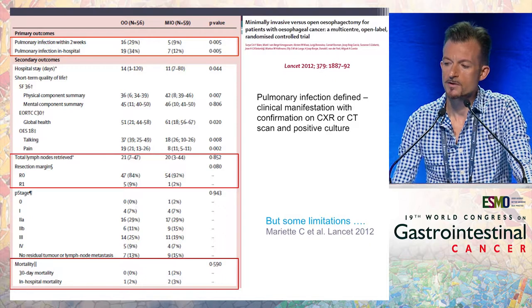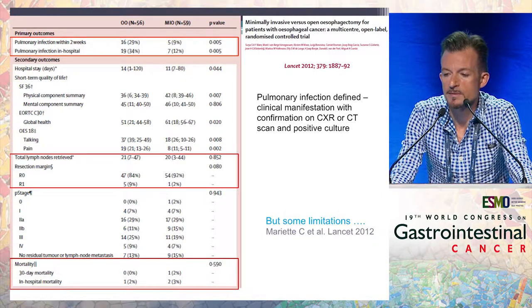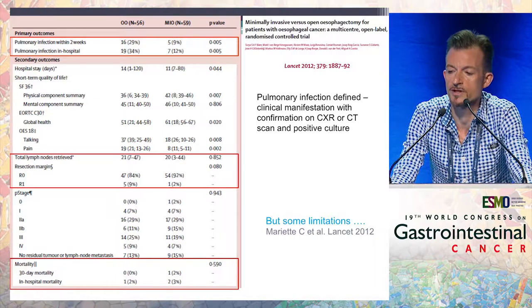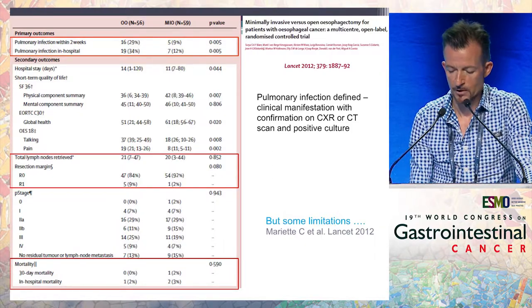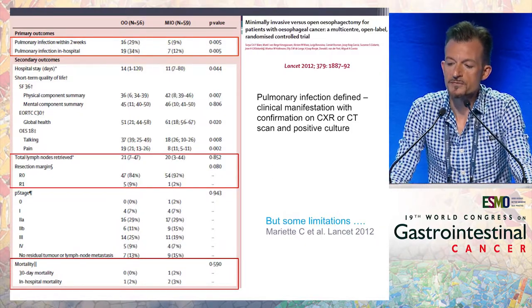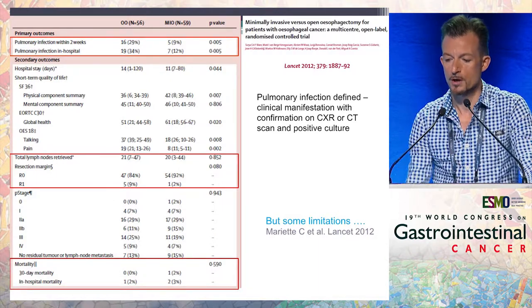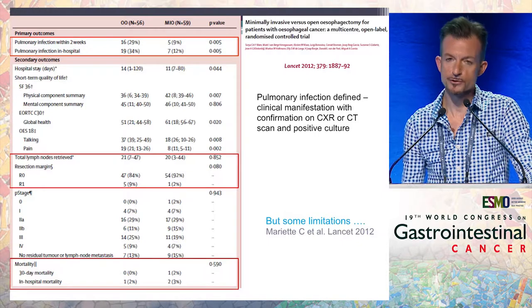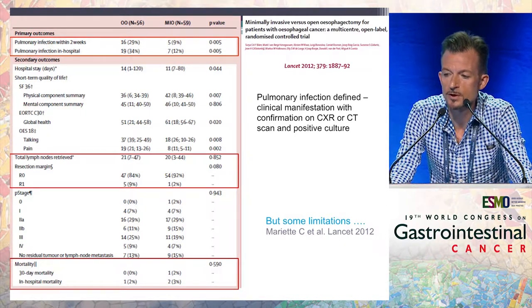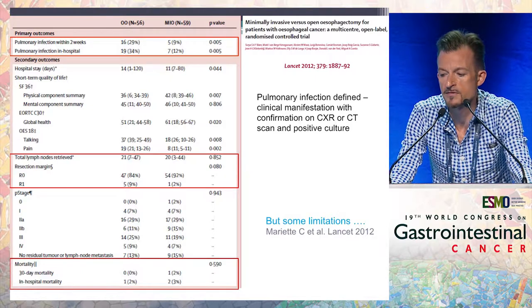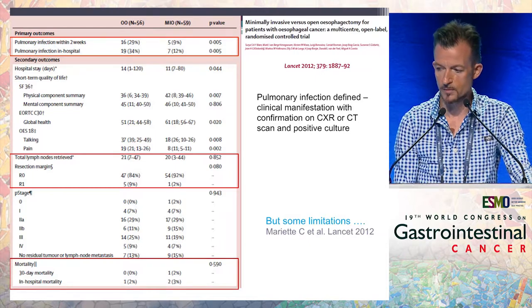Regarding the primary outcome, there was a strong, significant, and probably clinically relevant difference between the two arms: pulmonary infection at two weeks and pulmonary infection in-hospital were significantly lower in the minimally invasive group compared to the open group. Regarding other outcomes, there was no difference in R0 resection rate, though the majority of patients had small tumors — stage I or II — with very few stage III patients, who are usually the typical esophageal cancer population. Regarding postoperative mortality, no significant difference, but notably 0% in the open group versus 2% in the minimally invasive group.